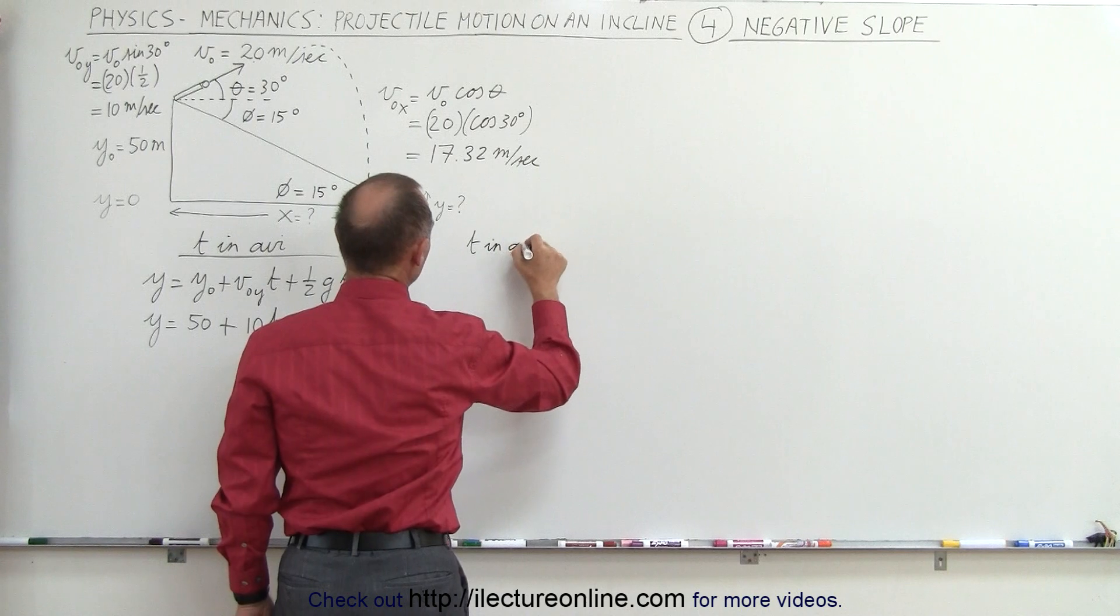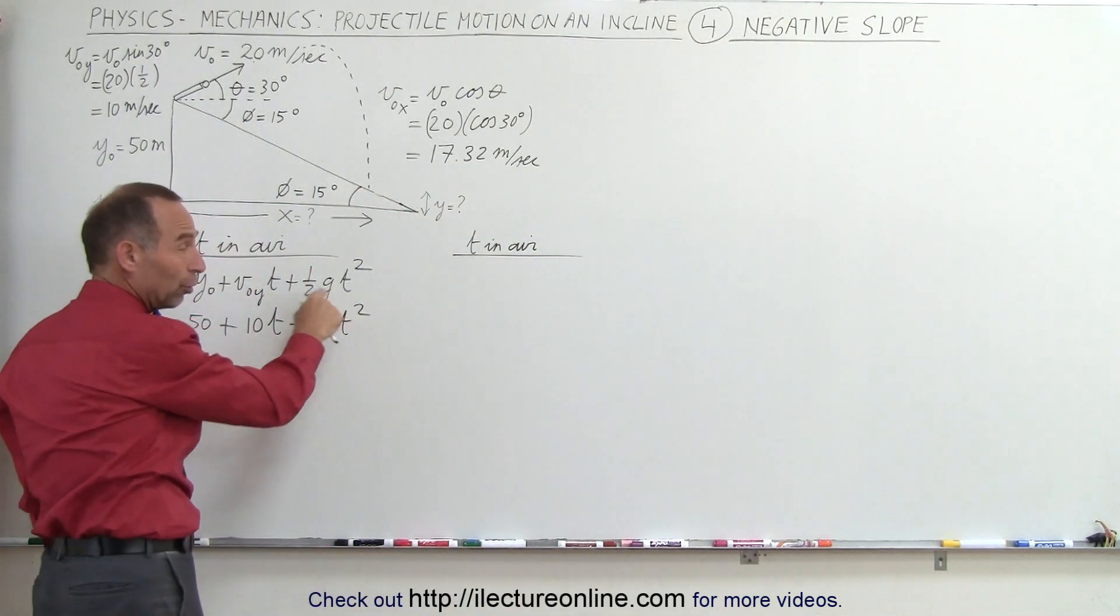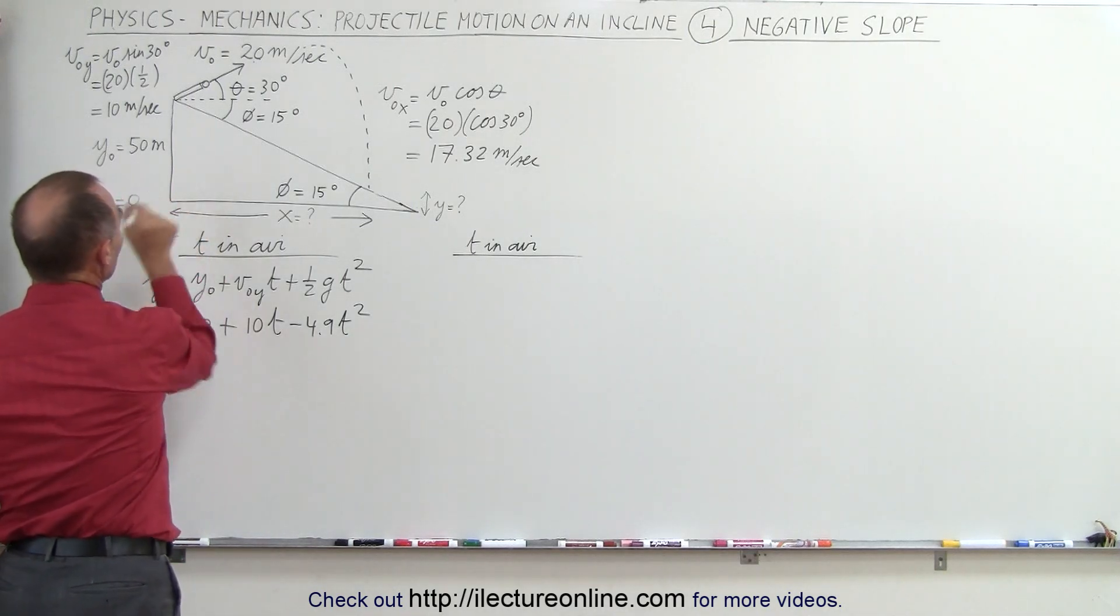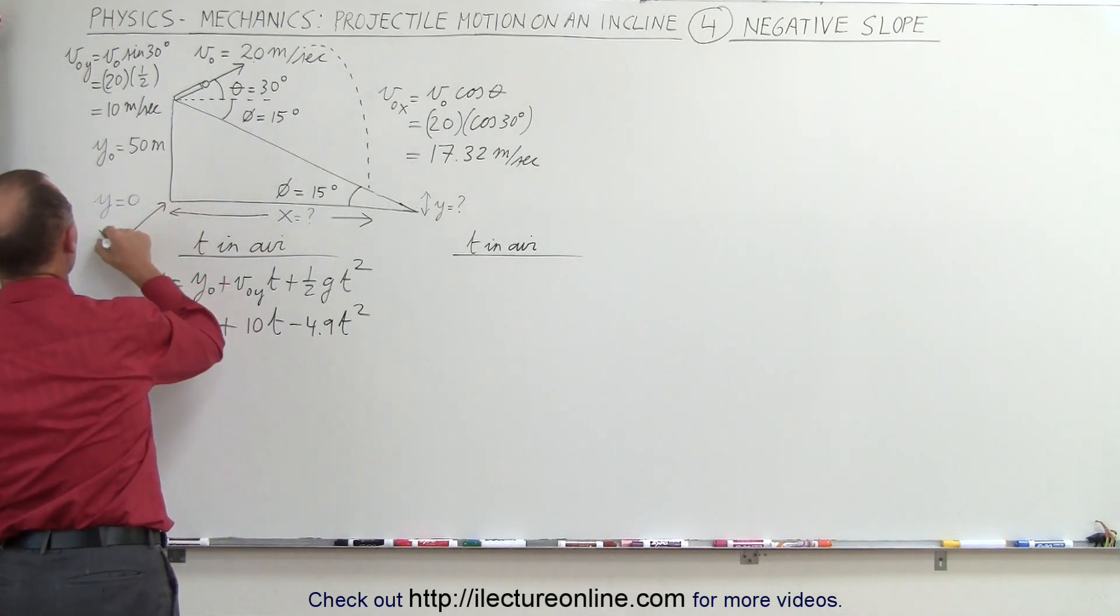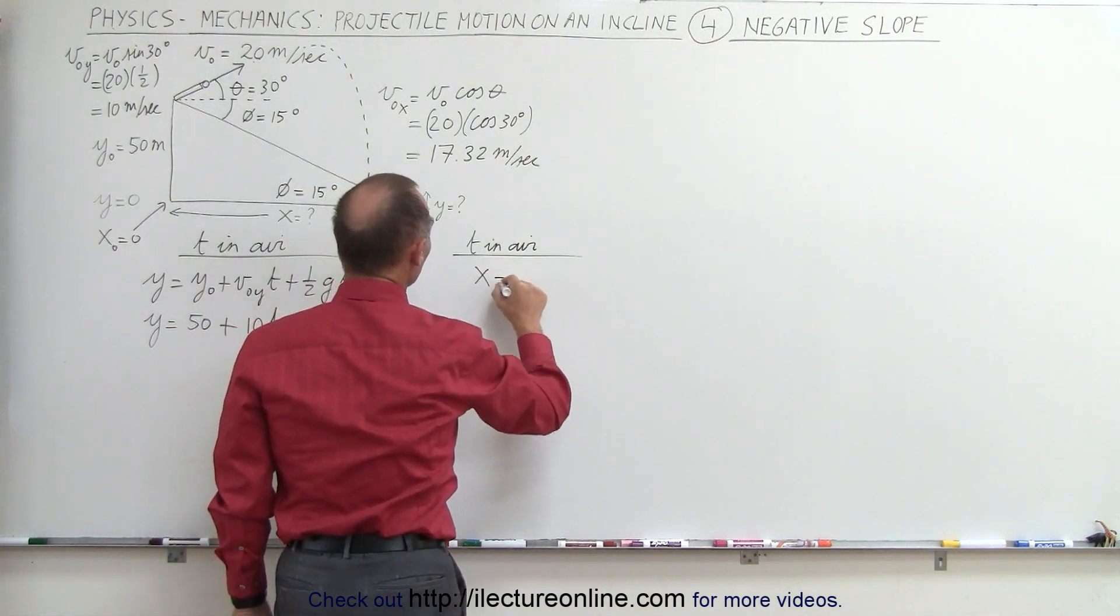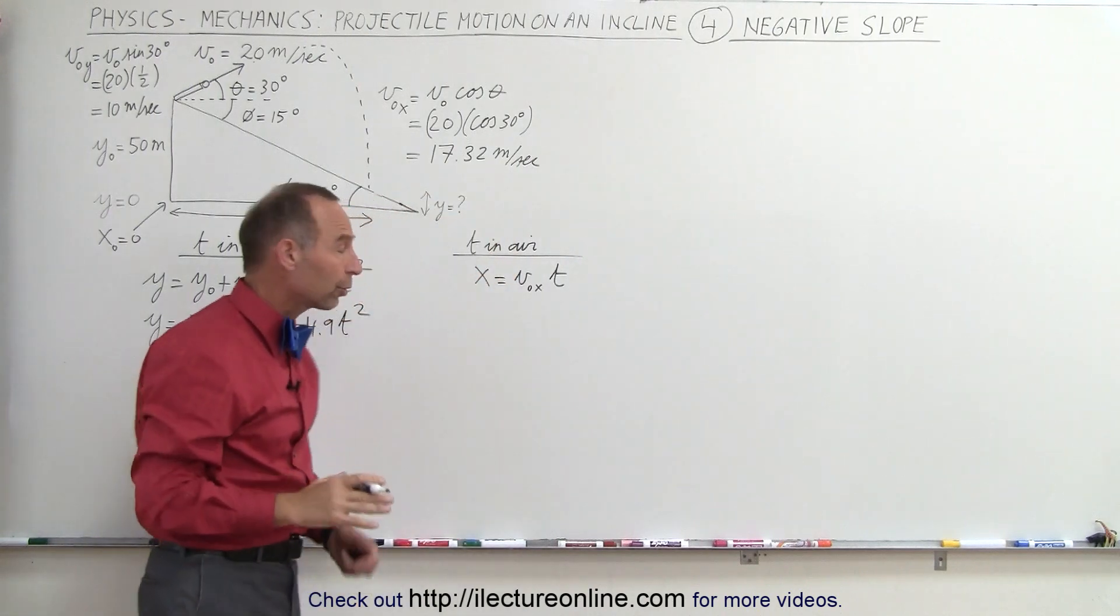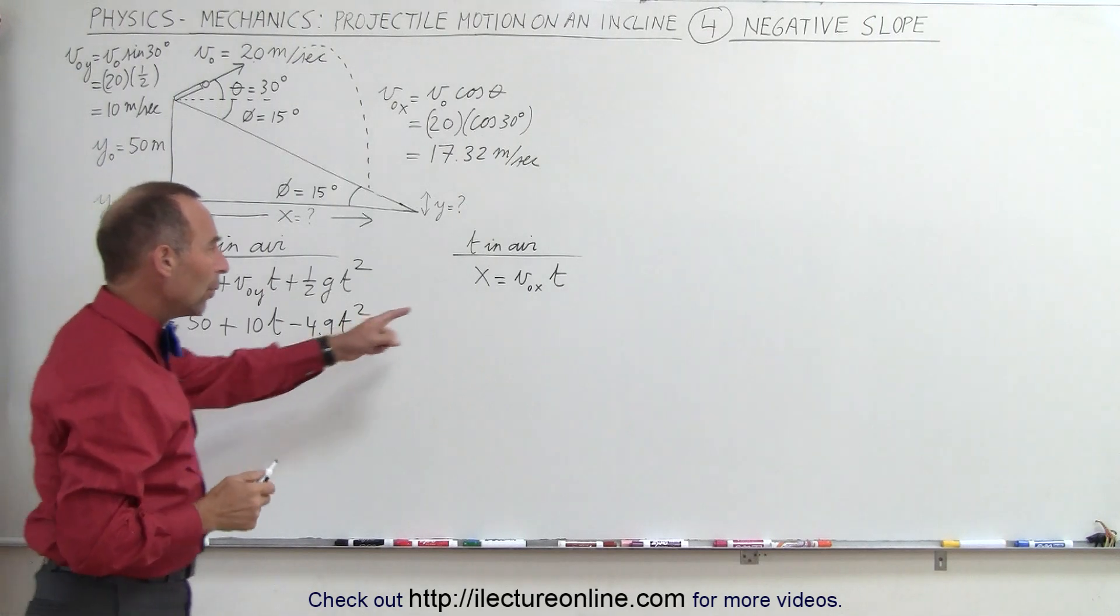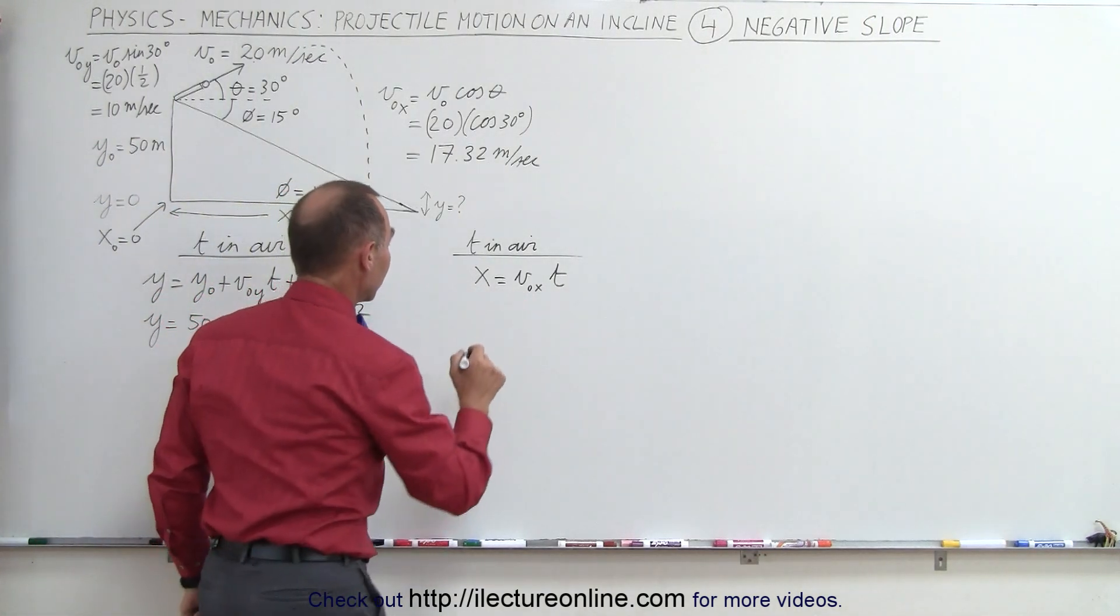So typically what we do then is find the second equation in the x direction and see what we get there. So time in the air. And notice in the x direction we don't want to have an acceleration term because there's no force in the x direction. And we'll call x sub not equal to zero. So let's say that we start at the zero point right here. So this point here we can say that x sub not equals zero. Therefore we get x equals v sub not in the x direction times time. So that's a much simpler equation. We only have the middle term here to deal with. We don't know x, we don't know time, but we do know the velocity in the x direction initially.